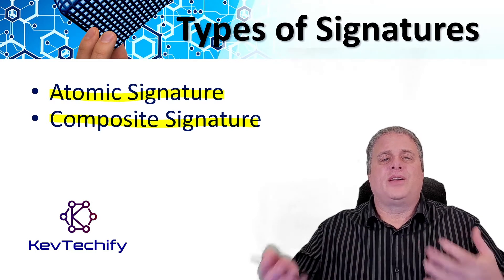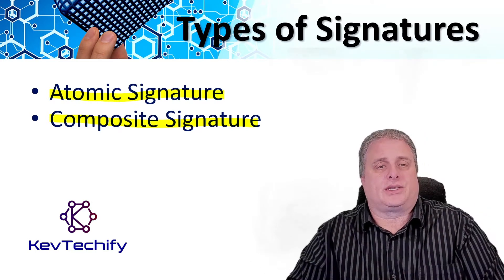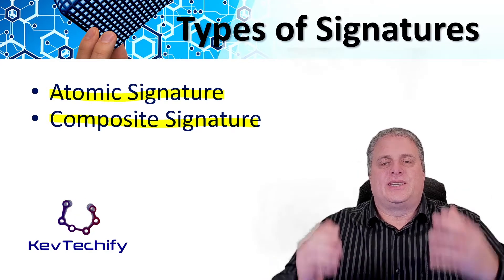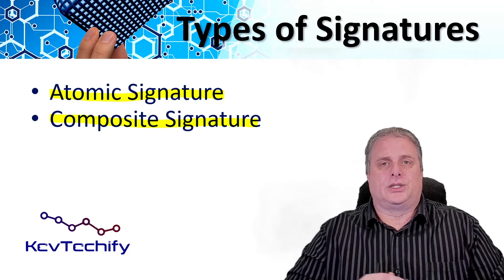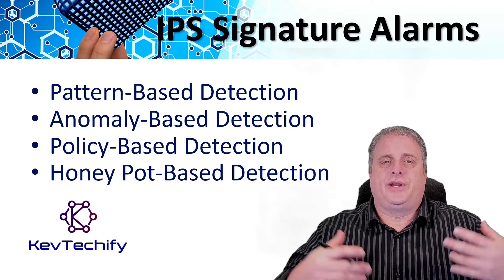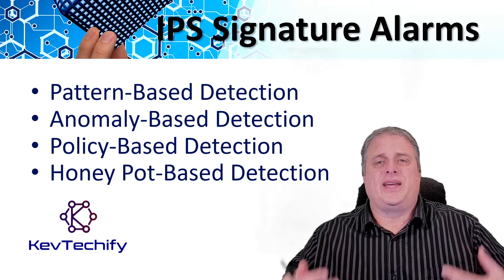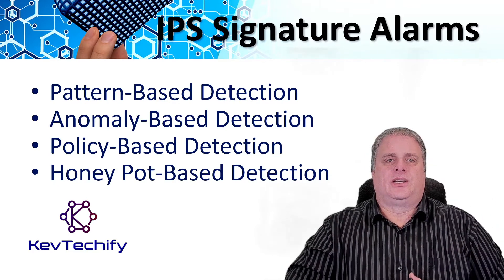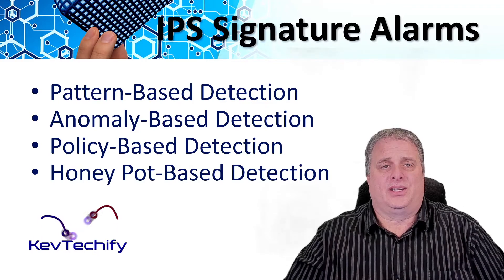The heart of any IPS signature is the signature alarm, which is often referred to as the signature trigger. Every IPS incorporates signatures that use one or more basic triggering mechanisms to trigger signature actions. There are four general IPS signature trigger categories.